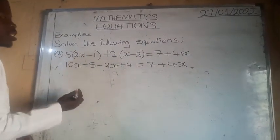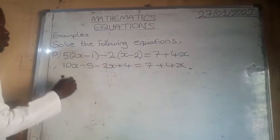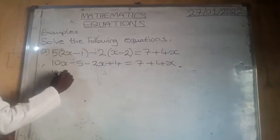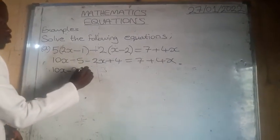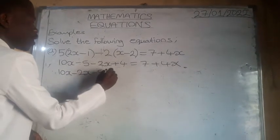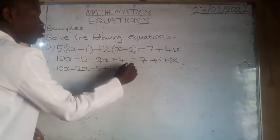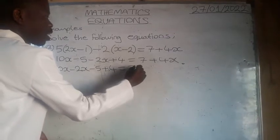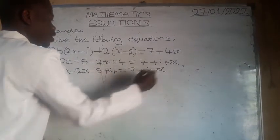At this stage, you have to collect the like terms. So 10x minus 2x minus 5 plus 4 equal to 7 plus 4x.